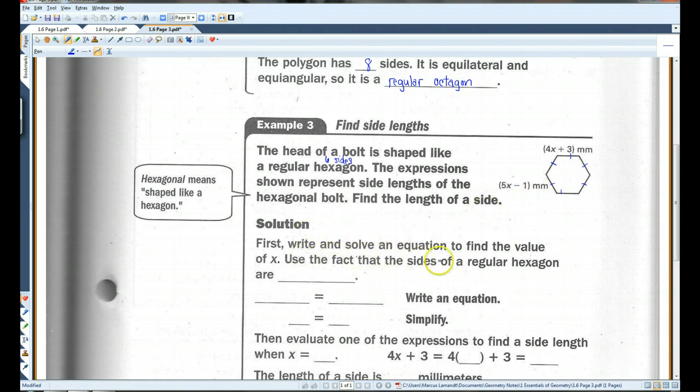So, use the fact that the sides of a regular hexagon are congruent. 4x plus 3 has to equal 5x minus 1. If I subtract 4x from both sides, this goes away. I'm left with 3 equals x minus 1. Then if I add 1, I'll just put this over here. x equals 4.